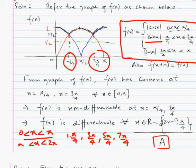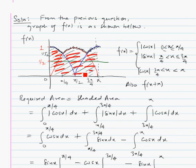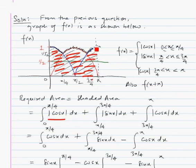Now we see the last question in this passage-type question. We are supposed to find the area bounded by the f(x) curve between 0 and π. It is a very straightforward question since we have already drawn the graph. We find the shaded area bounded by f(x) and the x-axis between 0 and π. Since the function changes definition at π by 4 and 3π by 4, we break it: from 0 to π by 4 we integrate mod cos x, and from π by 4 to 3π by 4 we integrate sin x.